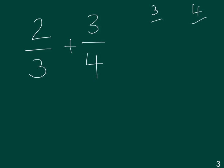When you look at this, one way of doing it is to find the lowest common denominator of both 3 and 4.